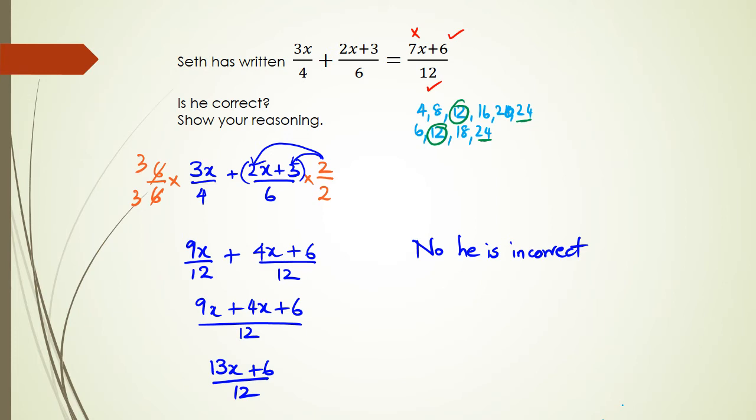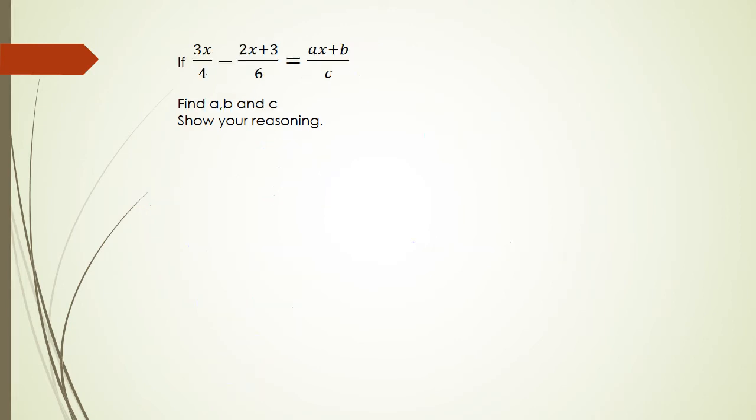Okay, that's basically it for this question, guys. I'm going to do one more style, which is the subtraction. And I guarantee you, people always make a mistake with the next type of question that I'm going to show you guys. And here's what it looks like. So we have if 3x over 4 minus 2x plus 3 over 6 equals ax plus b over c. Find a, b, and c and show your reasoning.